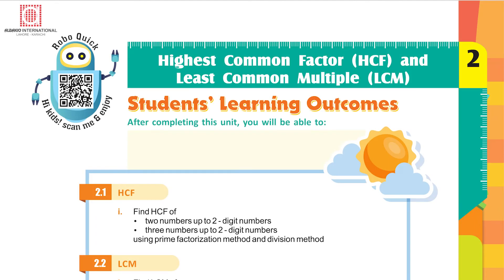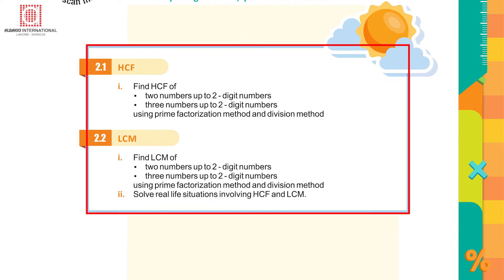Math Success Book 5. Today we are going to read Chapter 2. It covers finding HCF of two and three numbers up to two-digit numbers using prime factorization method and division method. It also covers finding LCM of two and three numbers up to two-digit numbers, and solving real-life situations involving HCF and LCM.